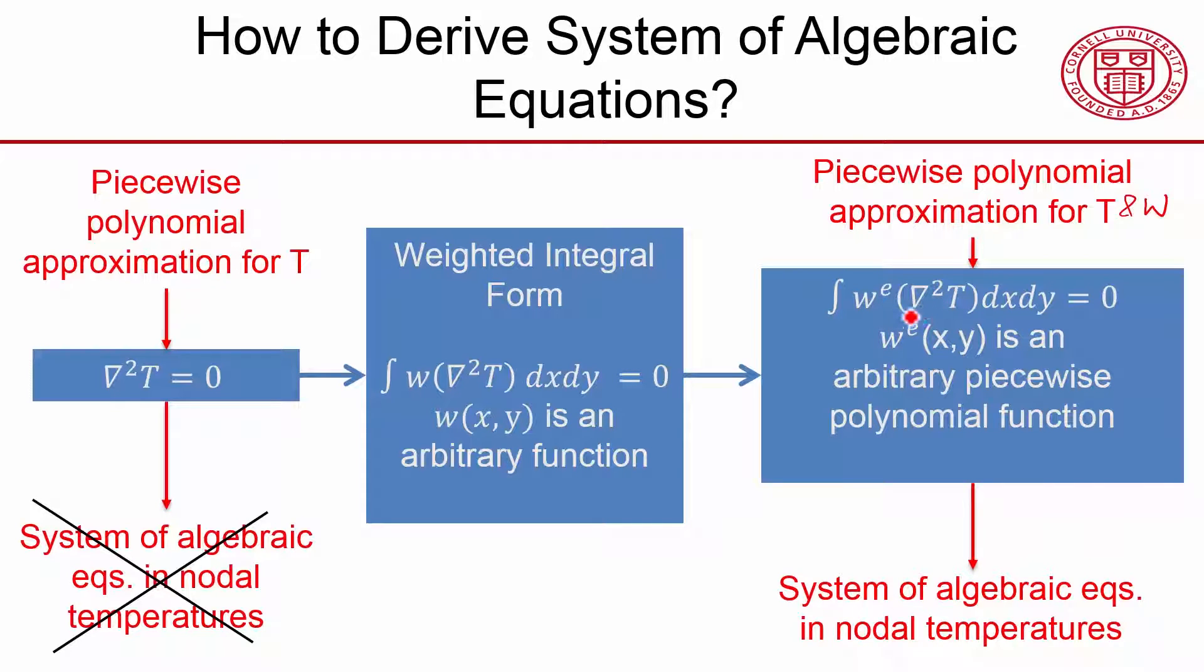is to do integration by parts and transfer one of the derivatives to the weighting function. So you'll go to a first derivative in temperature, and you'll go to the first derivative in the weighting function.